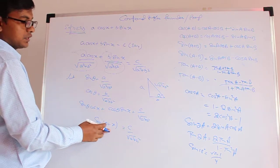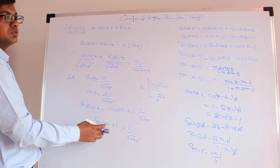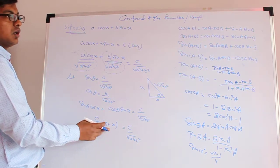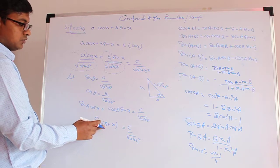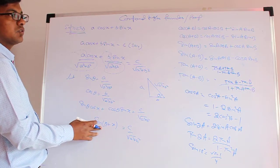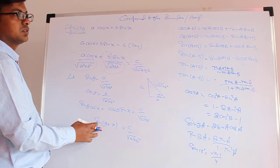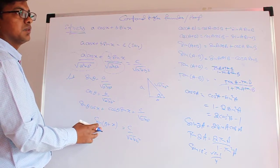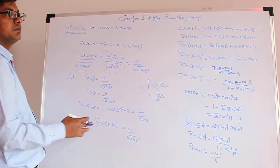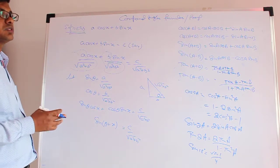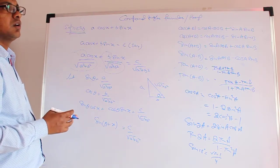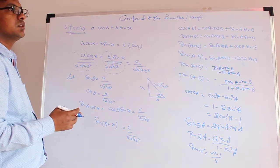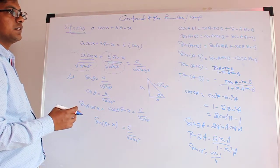We know that the maximum value of sine or cosine is 1 and the minimum value is −1.